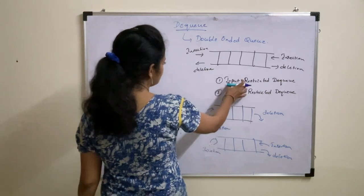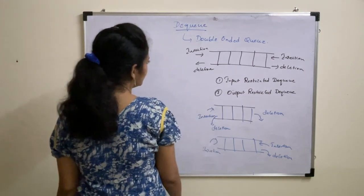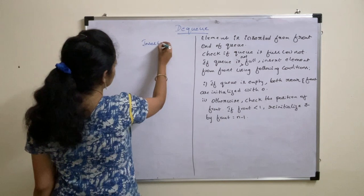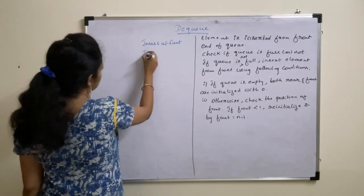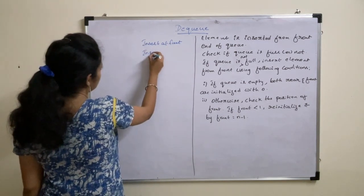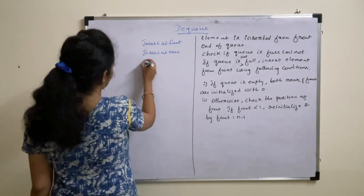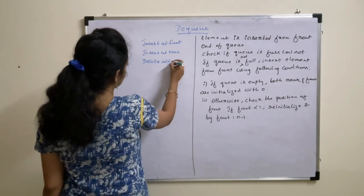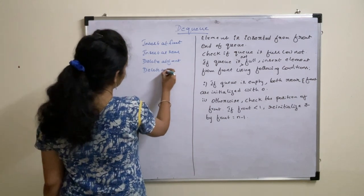We are going to perform four operations in DQ: insert at front, insert at rear, delete at front, and delete at rear.